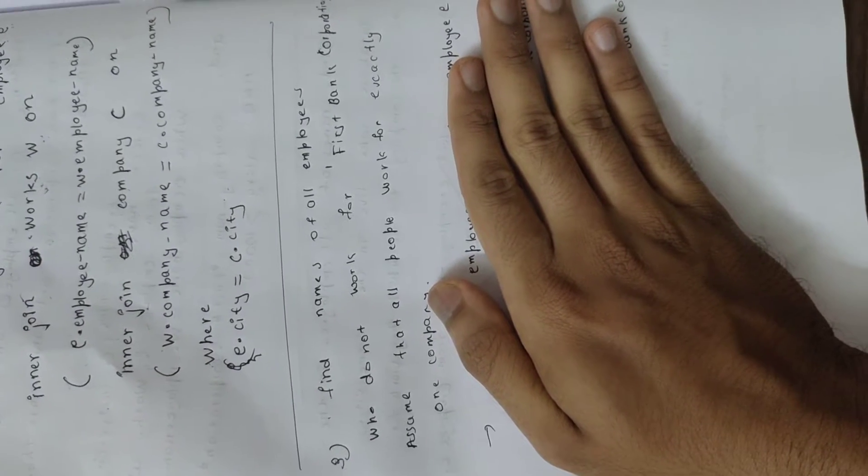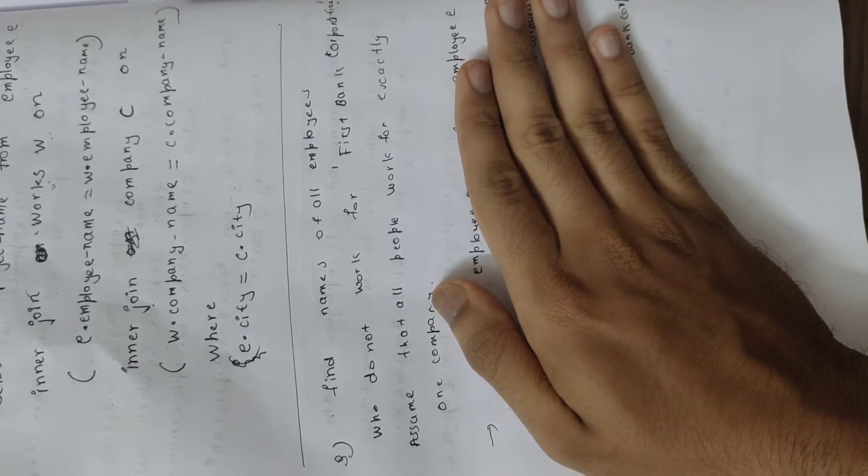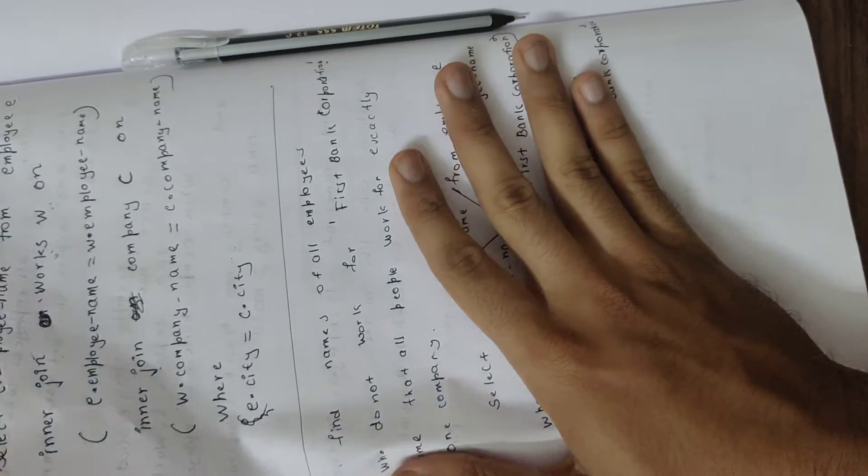So, answer not bad. Third question: Find names of all employees who do not work in First Bank Corporation. Assume that all people work for exactly one corporation.